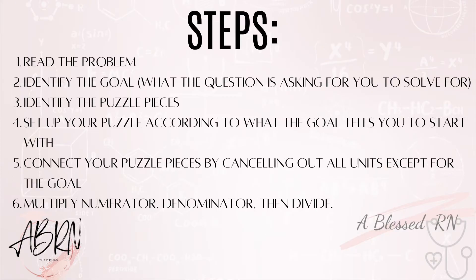Step four is to set up your puzzle according to what the goal tells you to start with. Step five, we're going to connect the puzzle pieces by canceling out all the units except for the goal. And then we're going to multiply across the top, multiply across the bottom, and divide the top by the bottom.